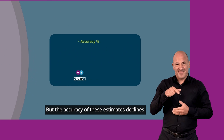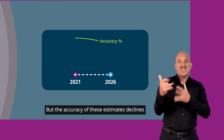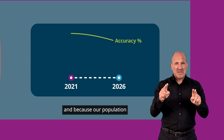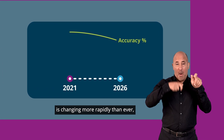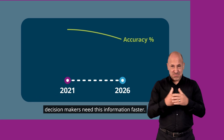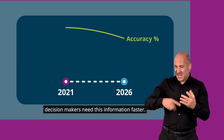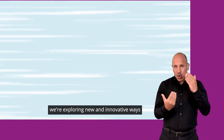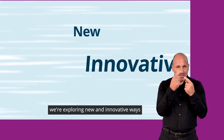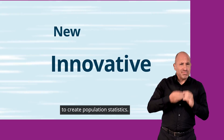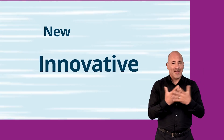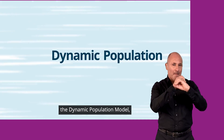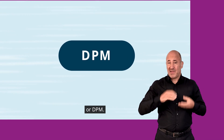But the accuracy of these estimates declines as we move away from the census year. And because our population is changing more rapidly than ever, decision makers need this information faster. To meet this need, we're exploring new and innovative ways to create population statistics, which is why we've developed the Dynamic Population Model, or DPM.